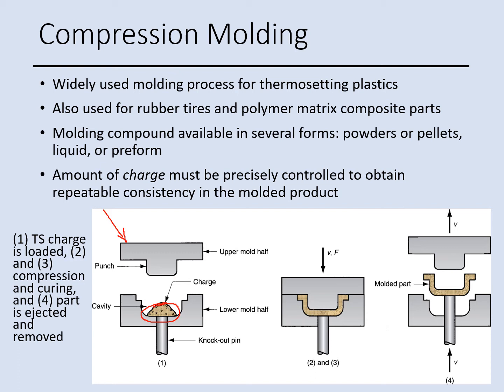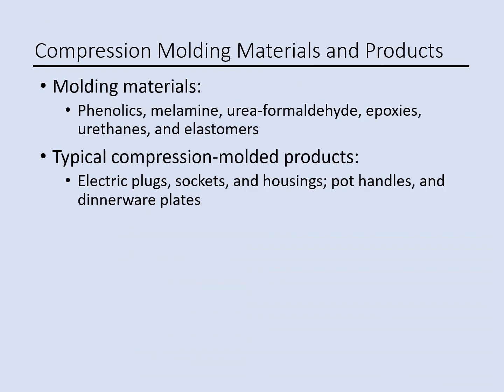When the mold is heated, the material melts and pressure is applied. After a certain time, the part solidifies, is ejected from the mold, and proceeds to the next step. Materials used in compression molding include phenolic, melamine, urea-formaldehyde, epoxy, elastomers, and urethane. Products range from electric plugs to dinnerware such as plates.